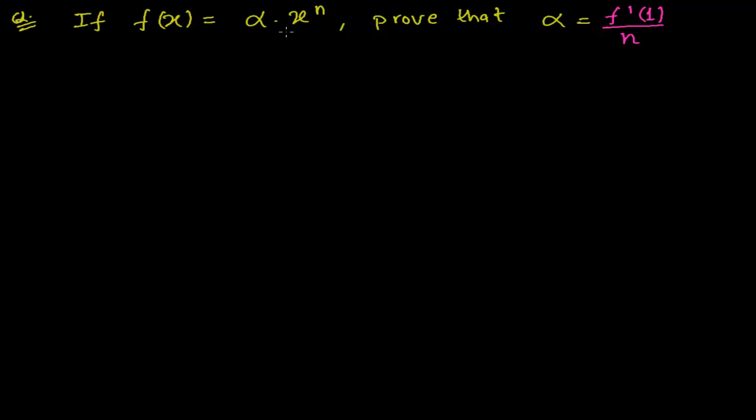Let me read first. If f(x) equals alpha times x to the power n, prove that alpha equals f'(1), that is derivative of 1 divided by n. This we have to prove. How to prove this?